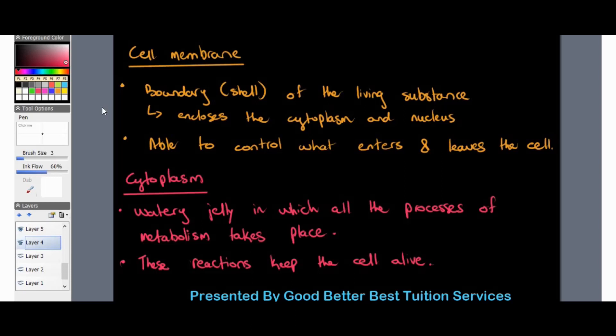The next part of the cell is the cytoplasm. If we're familiar with the term 'plasm,' it refers to a watery-like substance. The cytoplasm is a watery jelly in which all processes of metabolism take place — in other words, it is responsible for the processes within the cell. These reactions keep the cell alive and enable it to keep on living as well as reproducing, because cells also reproduce.